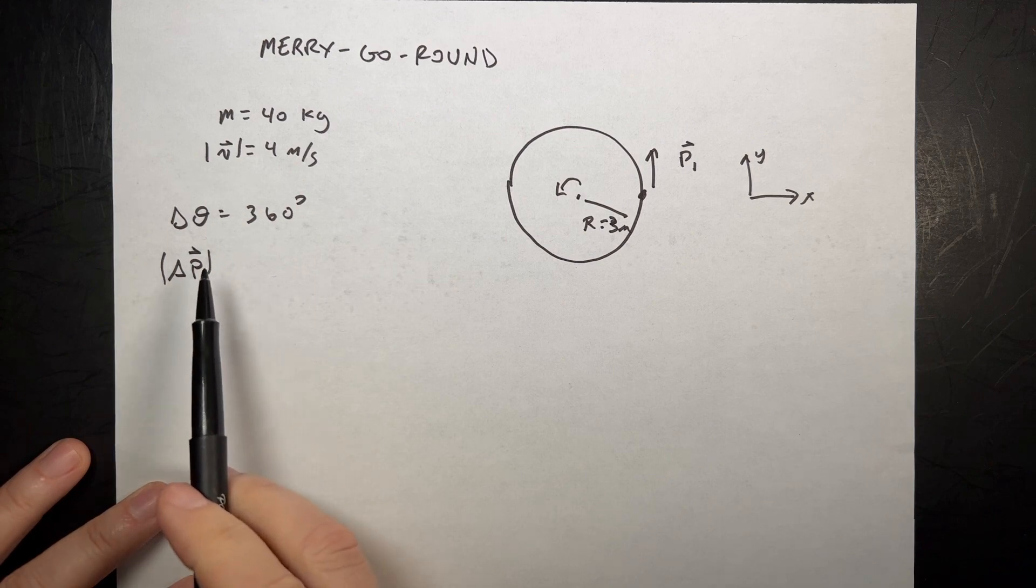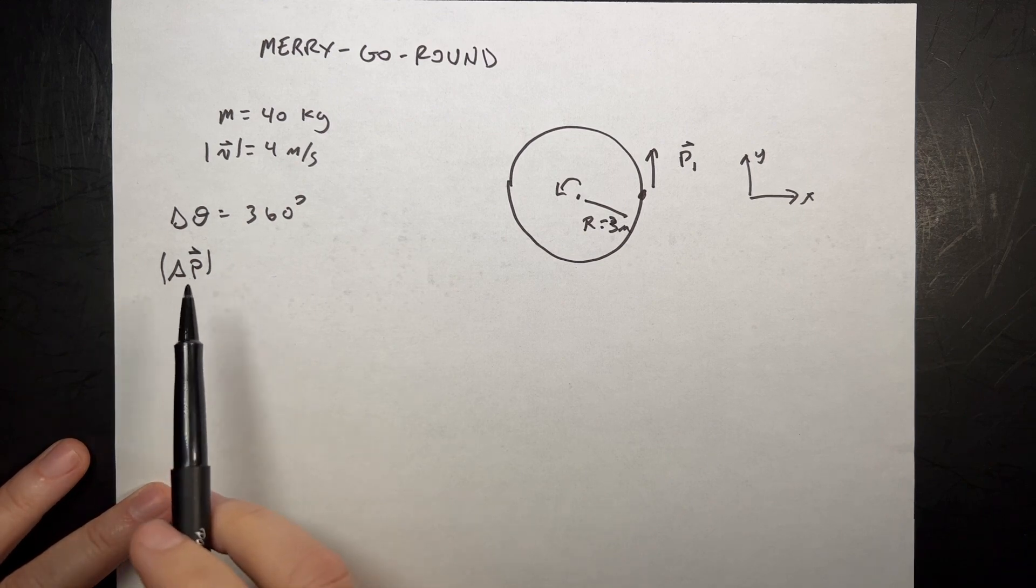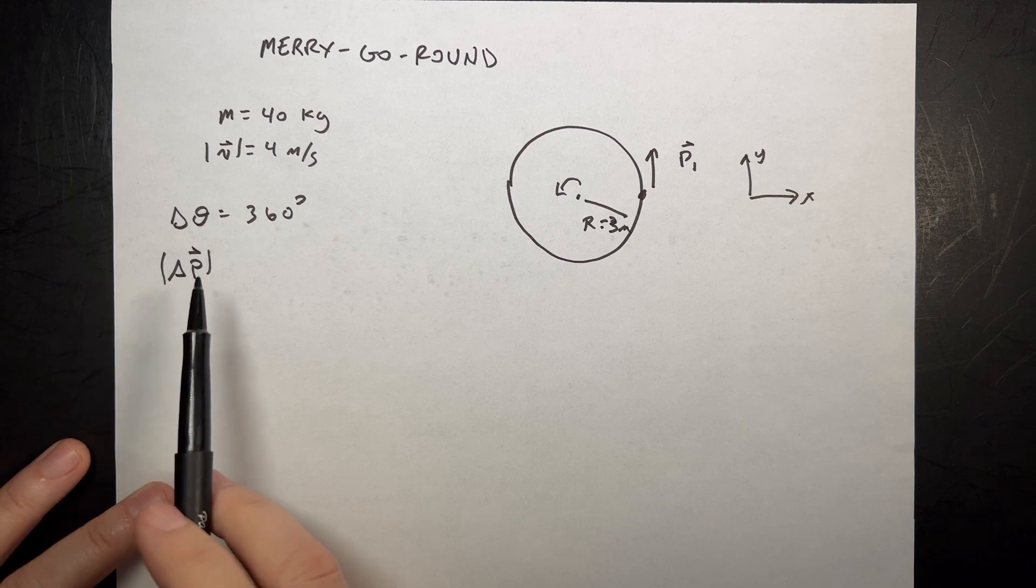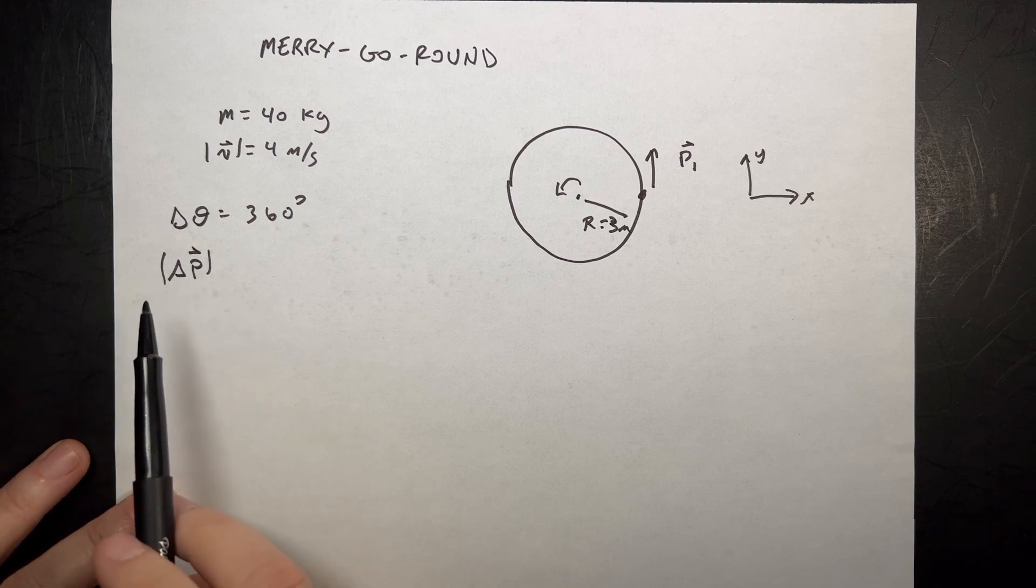Now here is something really important. We talk about vectors and we talk about magnitude and we talk about change. You've got to take the change and then take the magnitude. So let's do that. Let's draw a picture.